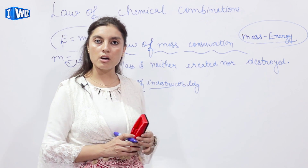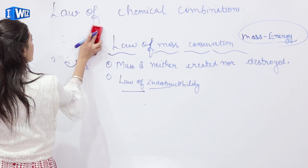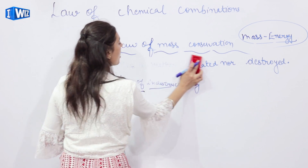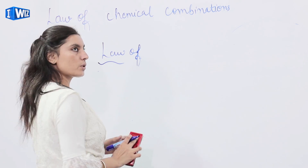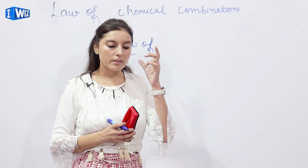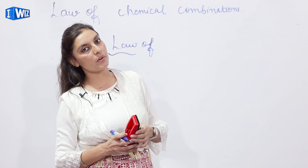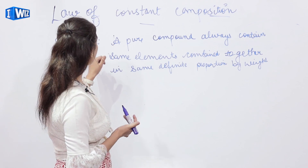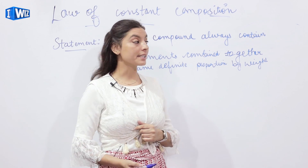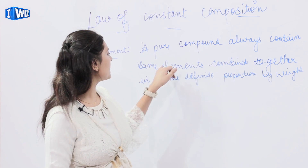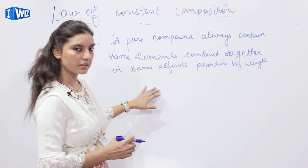We continue with the second law: the Law of Constant or Definite Proportion. As the name suggests, whenever two elements combine together to give a third product, the ratio in which they combine should bear a simple whole number ratio that always remains constant. This law states that a pure compound always contains the same elements combined in the same definite proportion by weight.